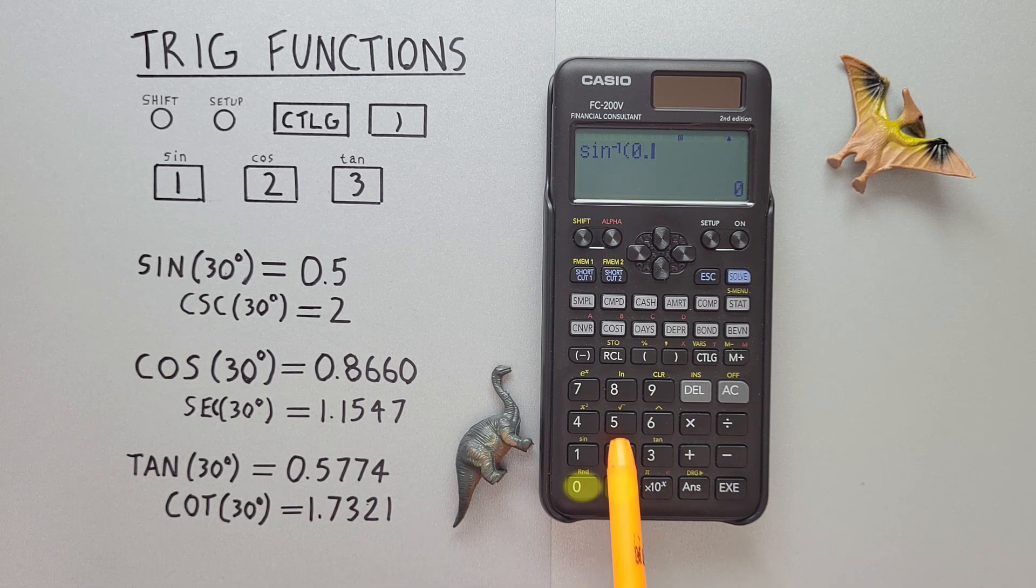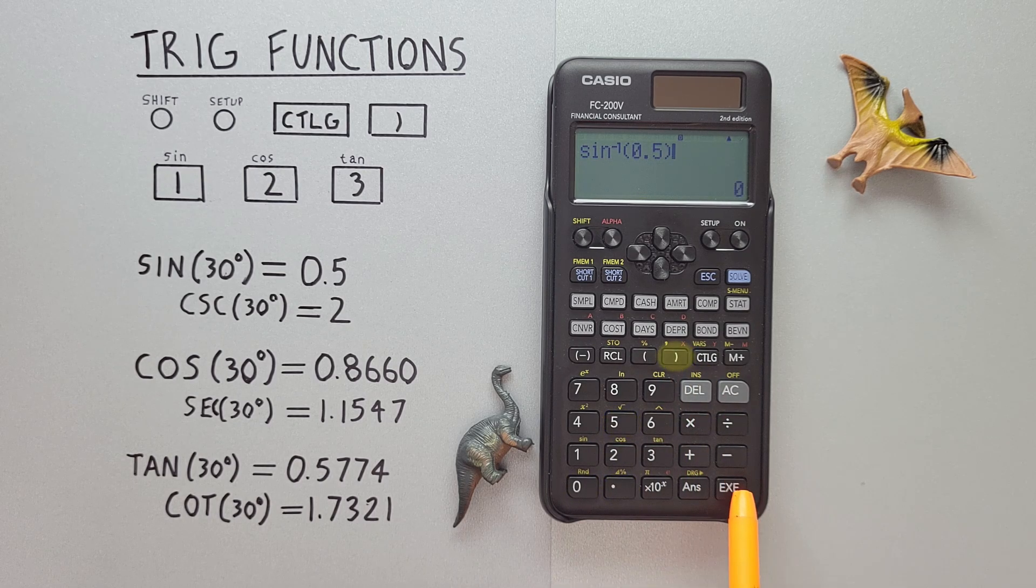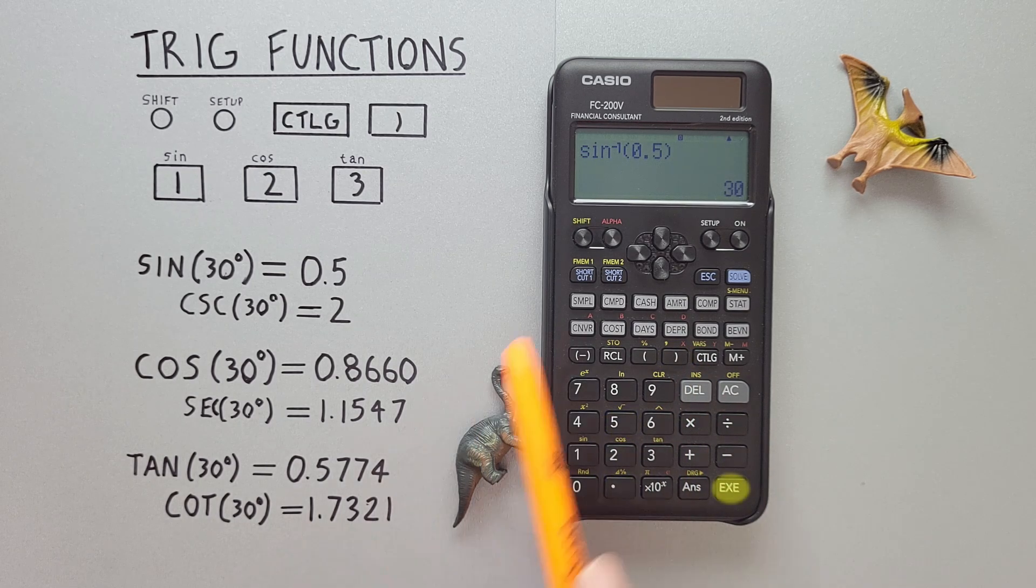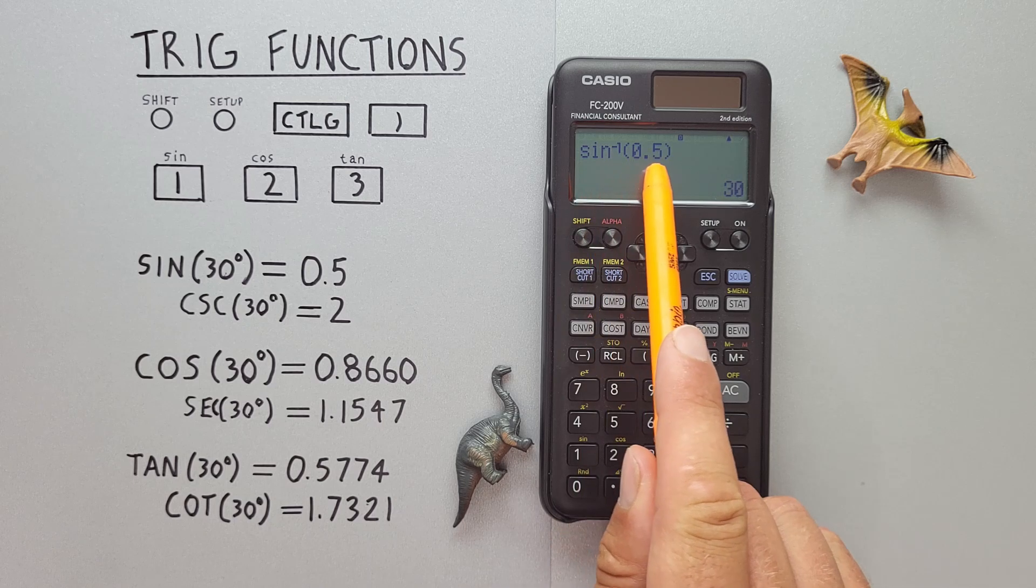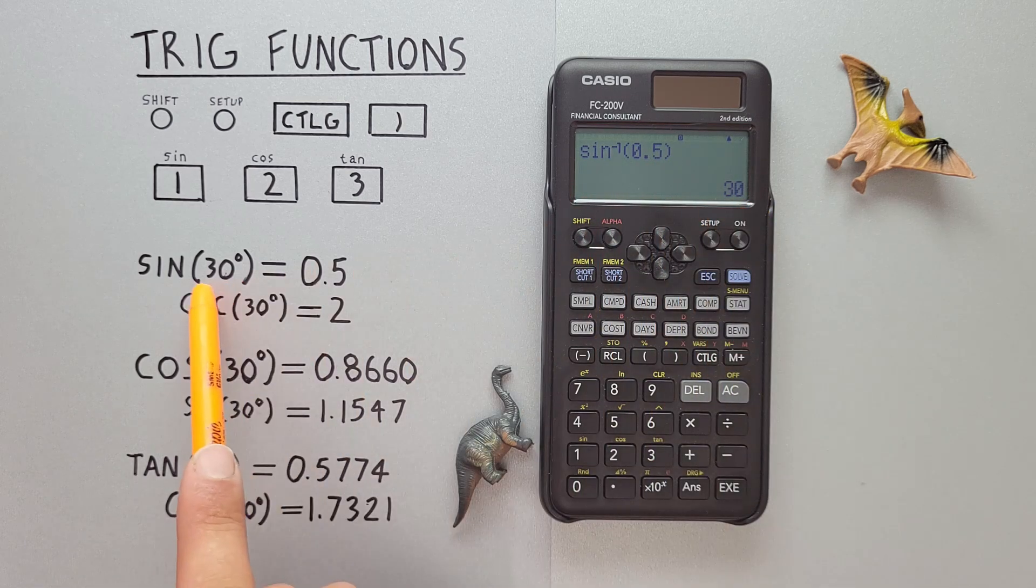Enter the 0.5, close our bracket, and hit exe. And we see we get the arc sine of 0.5 is equal to 30 degrees, which is correct.